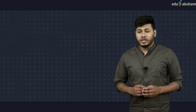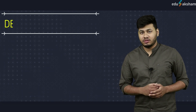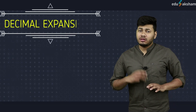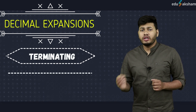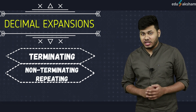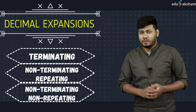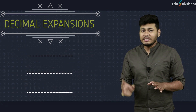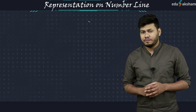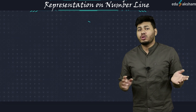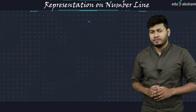Hello everyone. In our previous video, we learnt in detail about real numbers and their decimal expansions. We know that there are basically three types of decimal expansions: terminating decimal expansions, non-terminating repeating decimal expansions, and non-terminating non-repeating decimal expansions. Now let us learn how we can plot any number on the number line if its decimal expansion is given. We will do it with the help of examples.